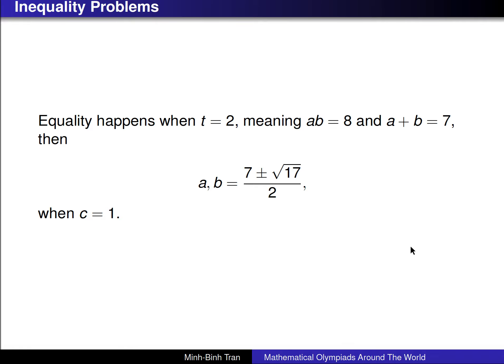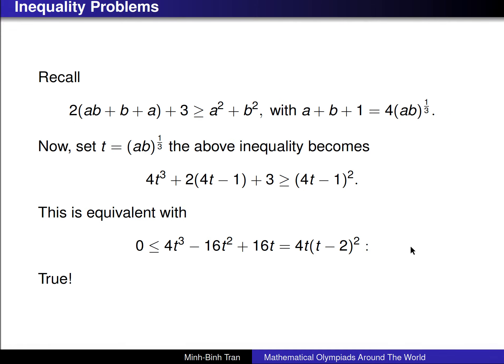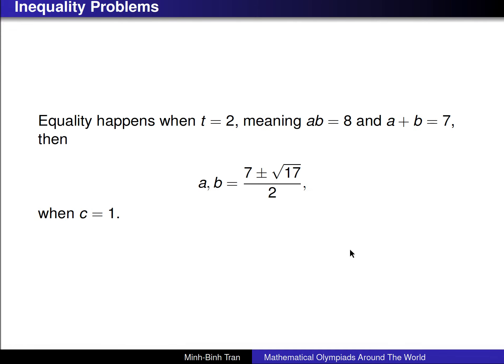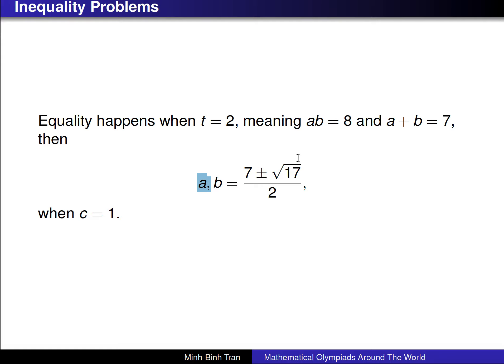Now let us consider when equality holds. Equality happens when T = 2, so AB = 8 and A + B = 7. Solving this equation gives A, B = (7 ± √17) / 2, under the assumption that C = 1. If you want to remove this assumption, you scale back to the original variables to get the general equality condition.